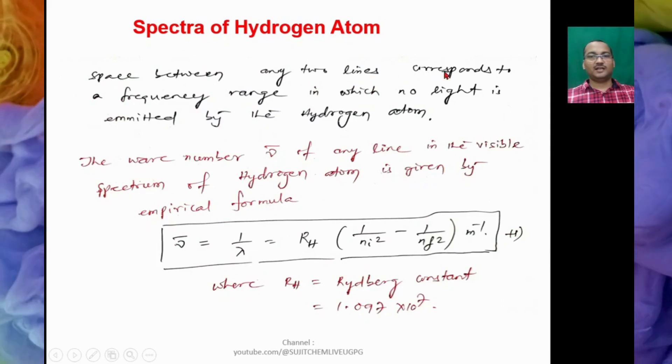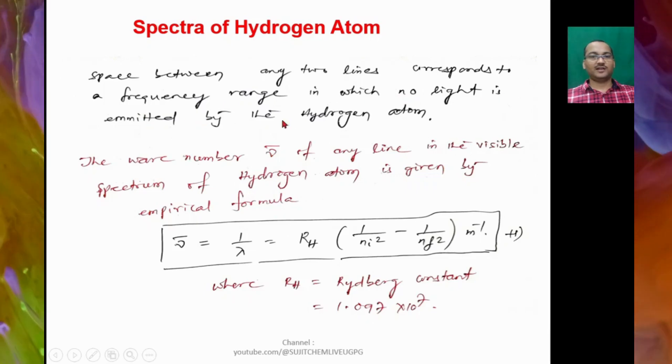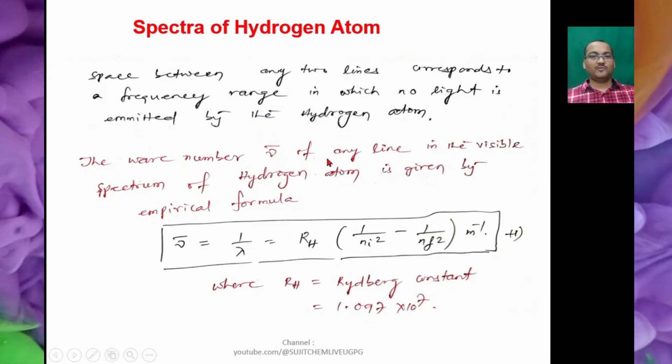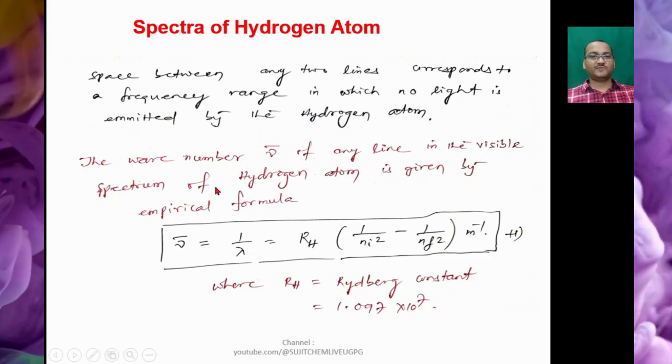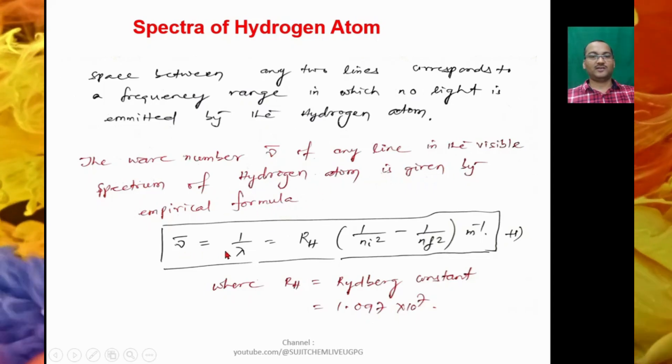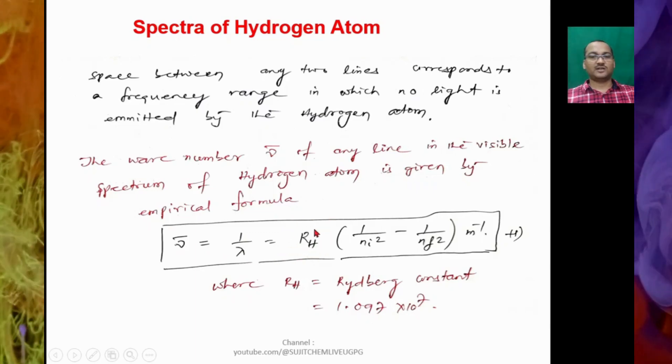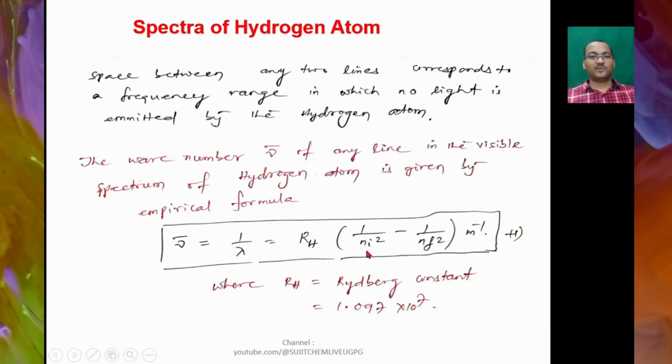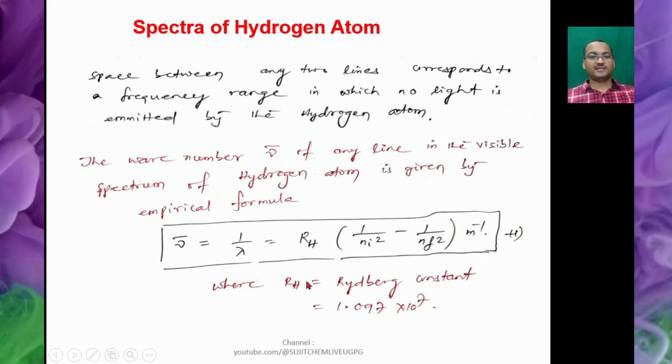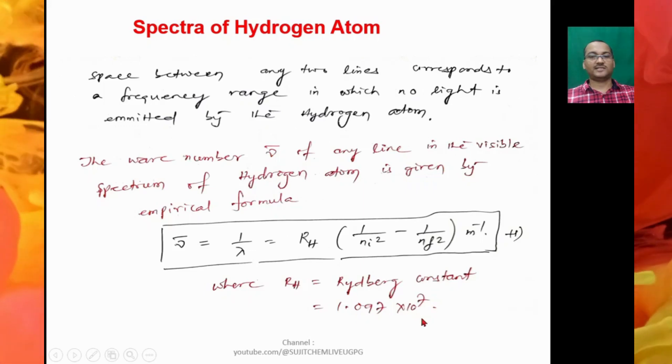The space between any two lines corresponds to a frequency range in which no light is emitted by the hydrogen atom. The wave number ν̄ of any line in the visible spectrum of hydrogen atom is given by empirical formula: ν̄ = 1/λ = RH × (1/Nᵢ² - 1/Nf²) meter inverse. So RH, the Rydberg constant, is 1.097 × 10⁷.